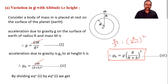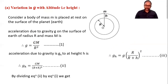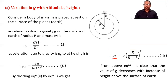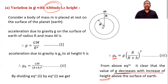Using this equation, we can write our conclusion. As height h increases, the denominator (R+h) increases, so g_h decreases. From the equation, it is clear that the value of acceleration due to gravity g decreases with increasing height. This is the conclusion of this argument.